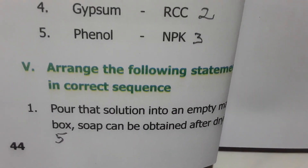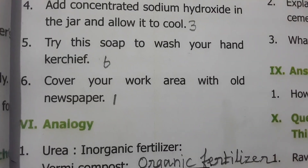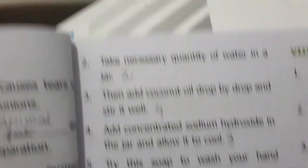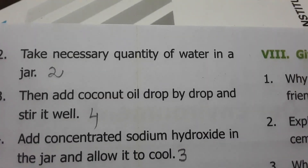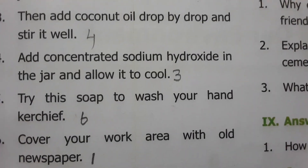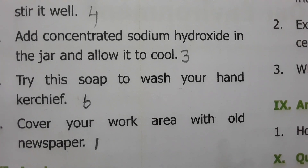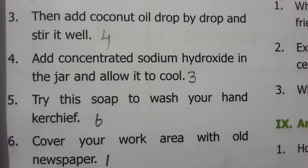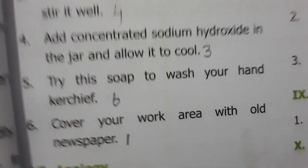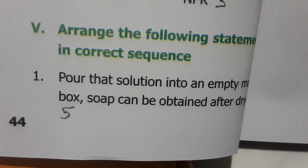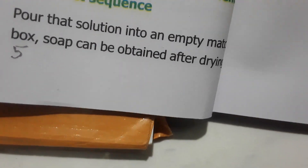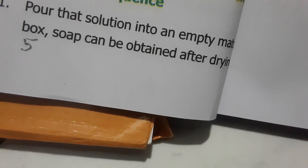Arrange the following statements in the correct sequence for making soap: First, cover your work area with old newspaper. Take the necessary quantity of water in a jar. Add concentrated sodium hydroxide and allow it to cool. Add coconut oil drop by drop and stir well. Pour the solution into an empty matchbox. Soap can be obtained after drying.